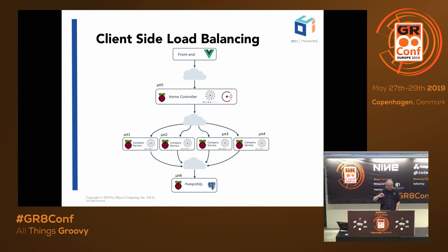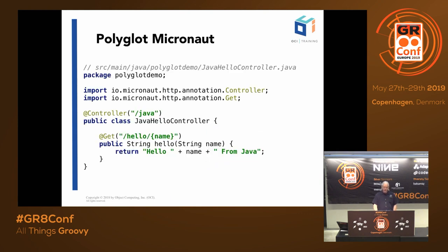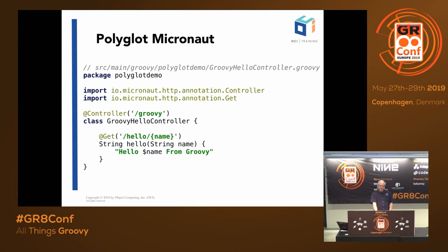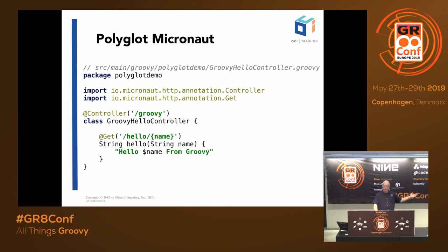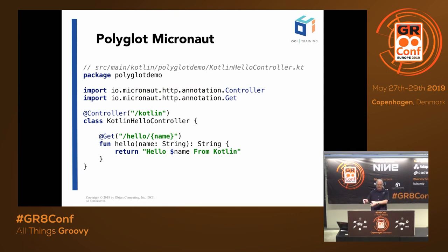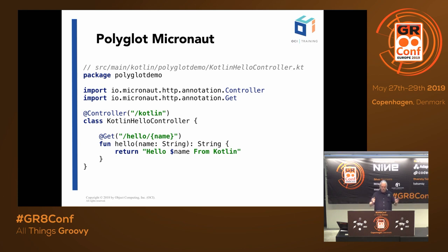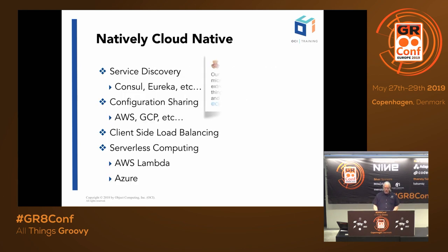Micronaut is a polyglot framework. Here's a Java controller, a Groovy controller, and a Kotlin controller — in all three cases using the exact same annotations. We don't have separate annotation sets for each language; we have one set of Micronaut annotations that work across all three languages. You can mix and match: a GreetingHelper written in Kotlin injected into a Groovy controller works just fine.